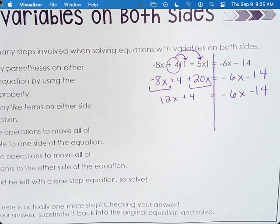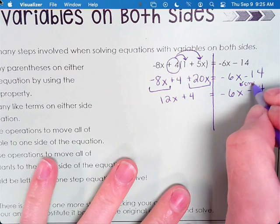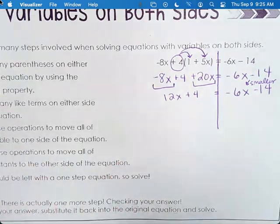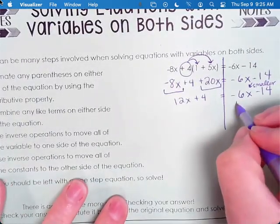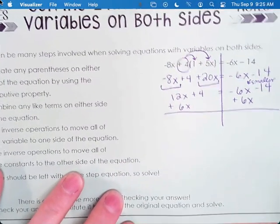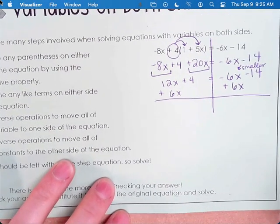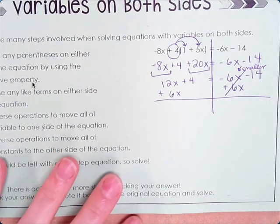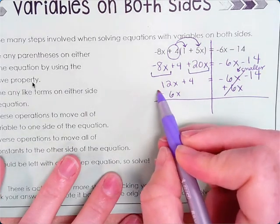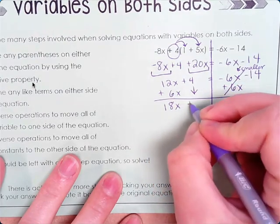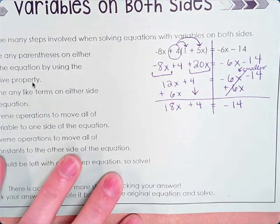Then we've talked about moving the smaller x value to the other side. So this negative 6x is your smaller one. So to get it to the other side, we do the opposite, which would be plus 6x. Put it underneath the other, or the like term. Negative 6 plus 6 is 0, so we can cross them out. We get 12x plus 6x is 18x. Carry down the plus 4. Carry down the equals negative 14.